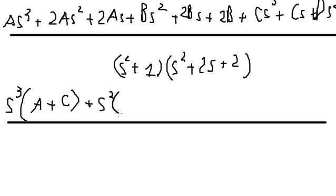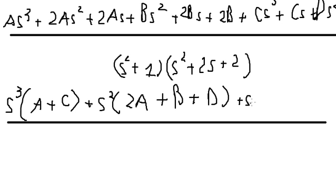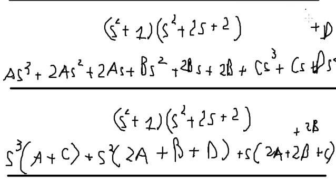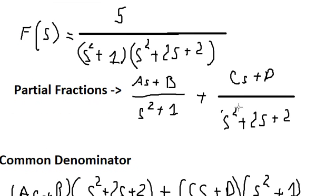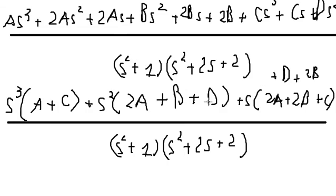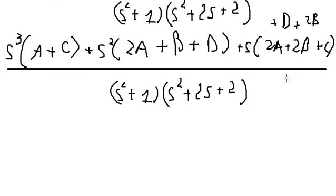For the s-squared coefficient we get two A plus B and D. For the s coefficient we get two A, two B, and C. For the constant term we just get two B and D. Looking carefully at the coefficients, we see that we only have the number five, meaning D plus two B equals five.